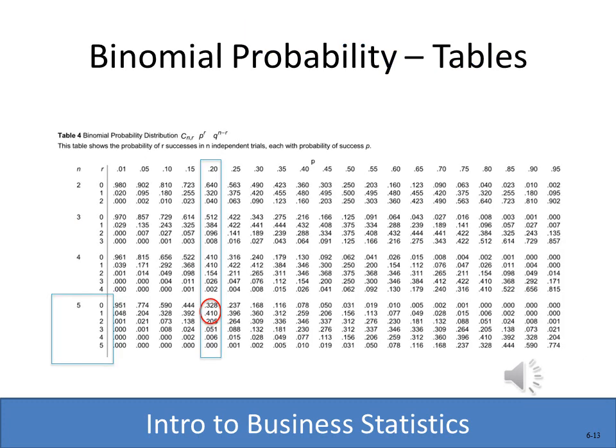Here's an example of a binomial probability table, which you should find in the appendix at the back of your textbook. Along the far left column we look at the n value — with five flights, n is five. Then we find the probability column for 0.2. With n equals five, x equals zero, and probability of 0.2, the table gives us 0.328, which is just slightly rounded compared to the formula result of 0.3277.